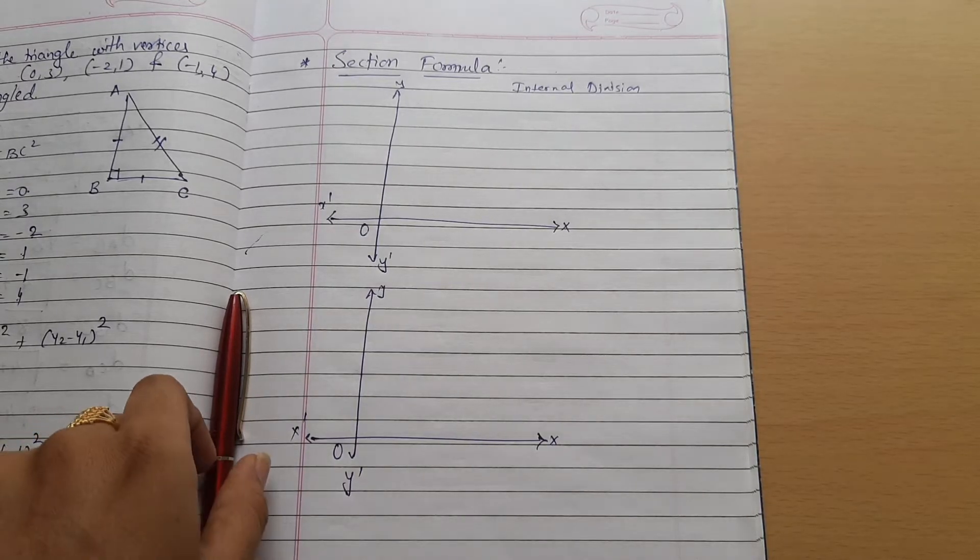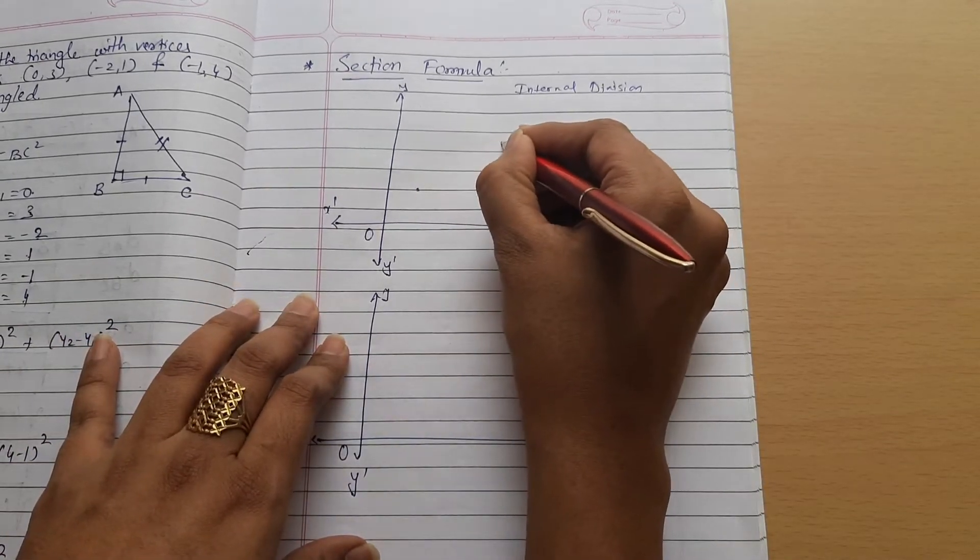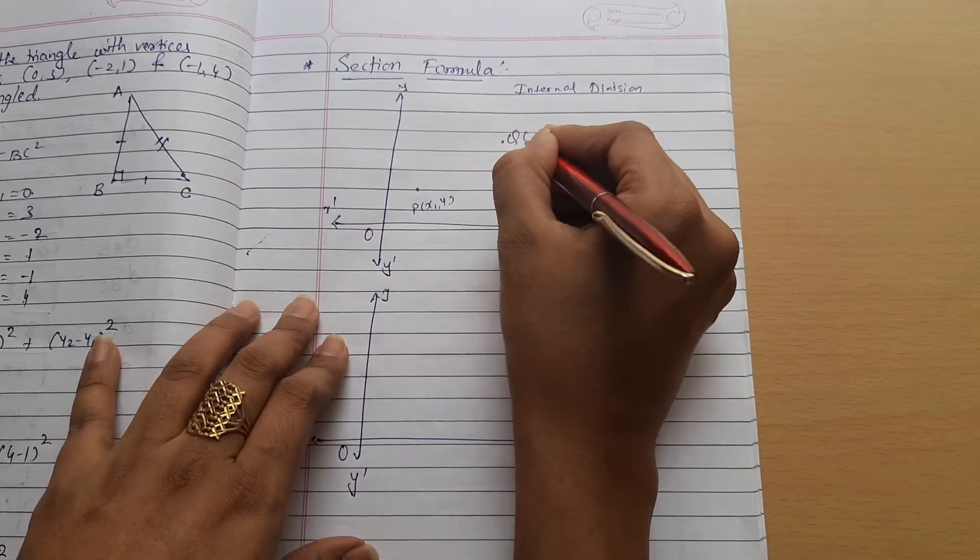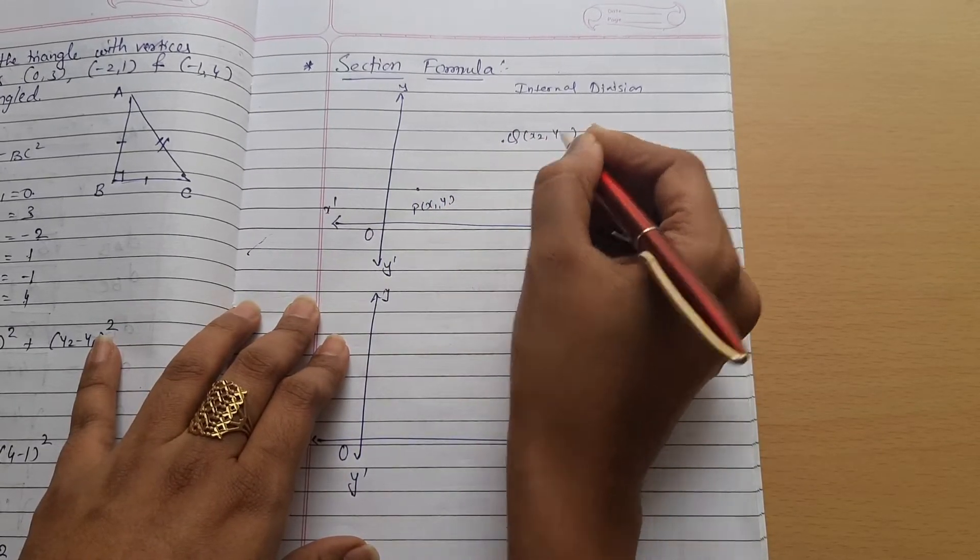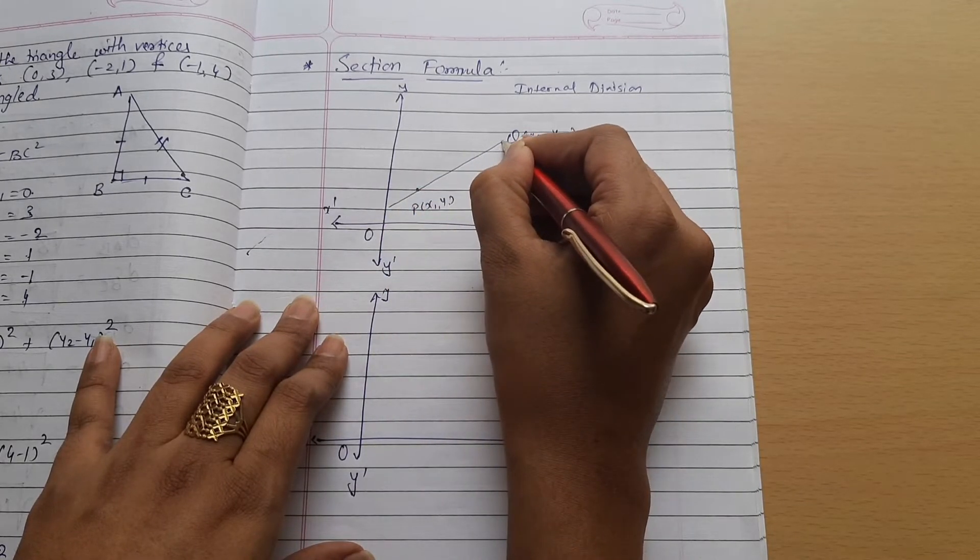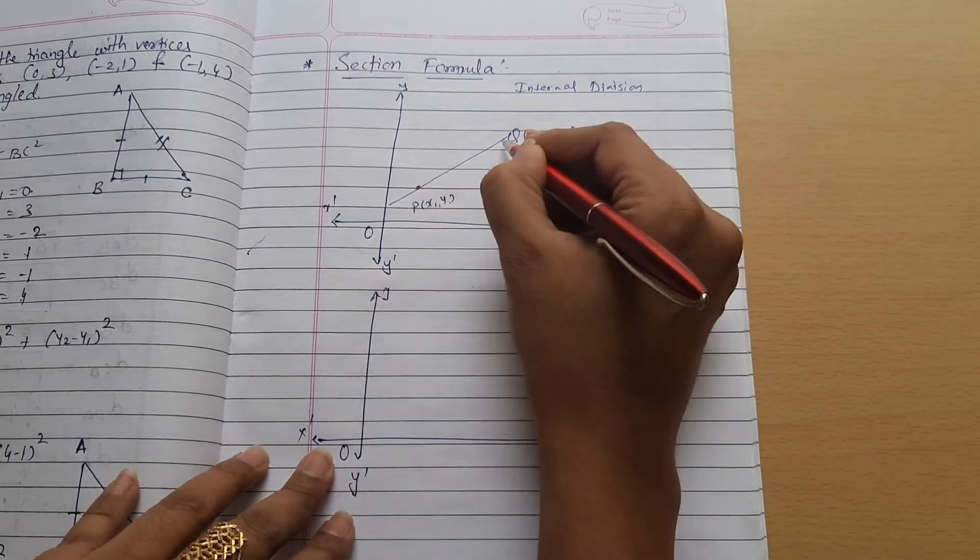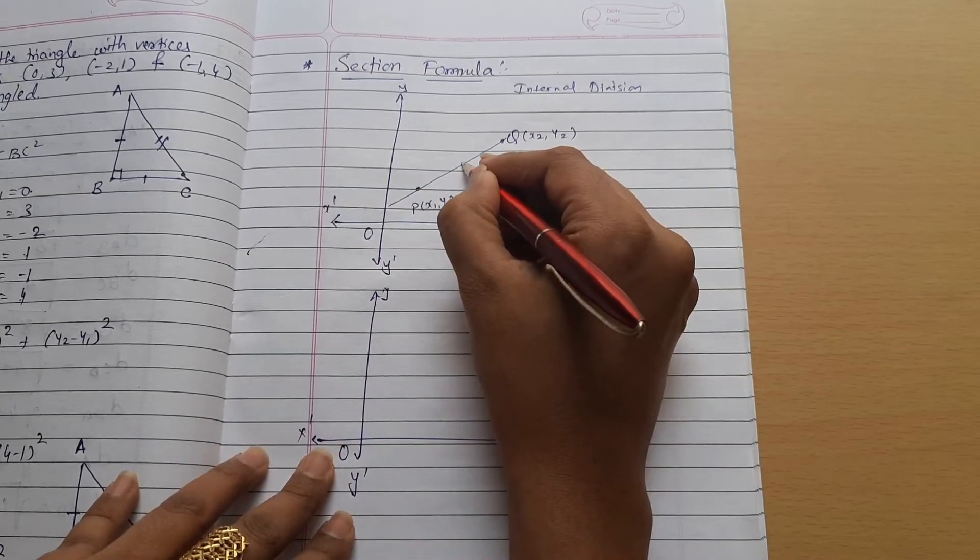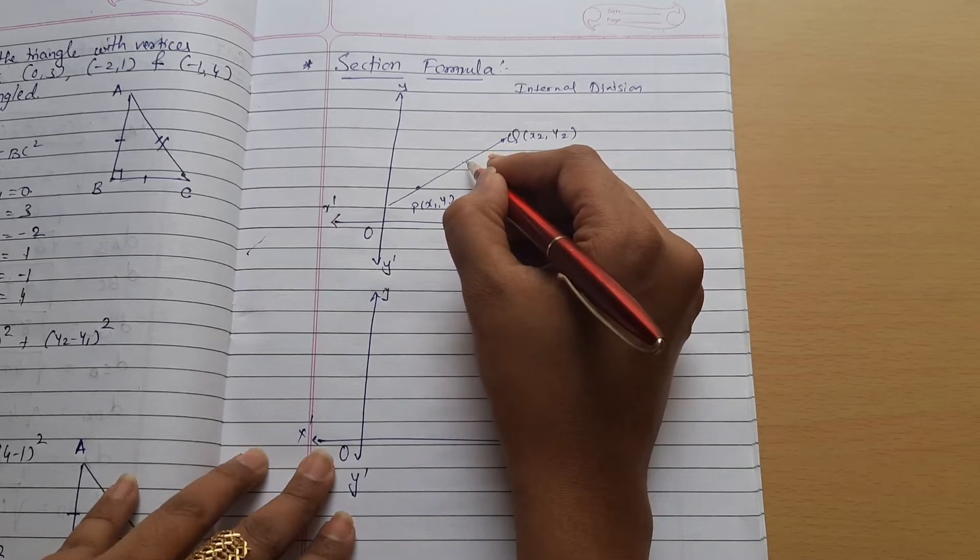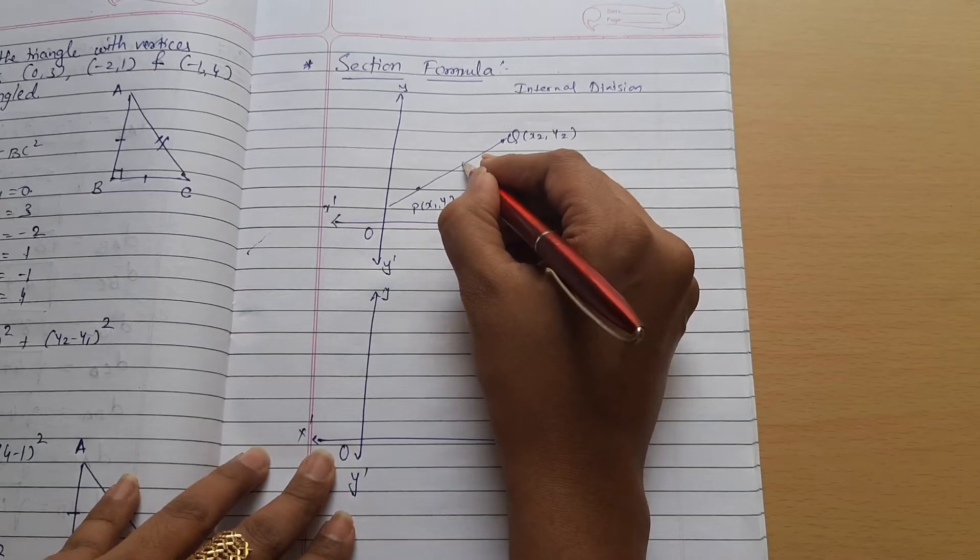Internal division means: say two points are P of x1, y1 and another one is Q of x2, y2. There's a line between them, and a point divides that line. The point can be anywhere on the line, not necessarily in the exact middle.